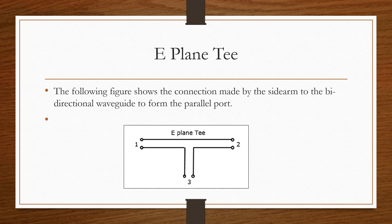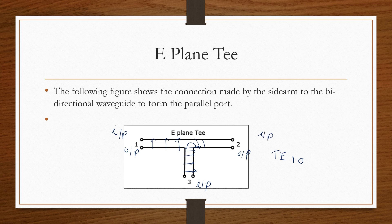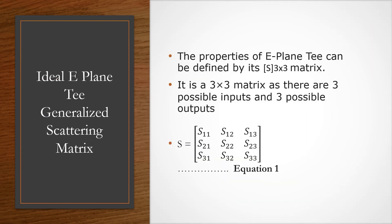We are going to study the working of this. If port 3 is the input at mode TE10, then the outputs at port 1 and port 2 are out of phase. If port 1 and port 2 are both inputs and are 180 degrees out of phase, then we get maximum output at port 3. If both inputs are in phase, then we get a subtracting value. Always remember: to get maximum output, port 1 and port 2 must be out of phase. Now we want to find the scattering matrix.